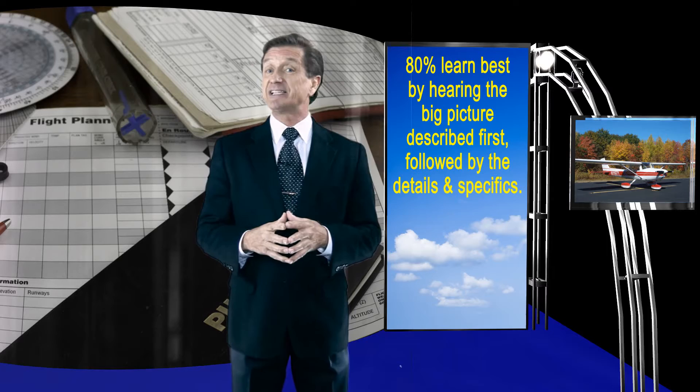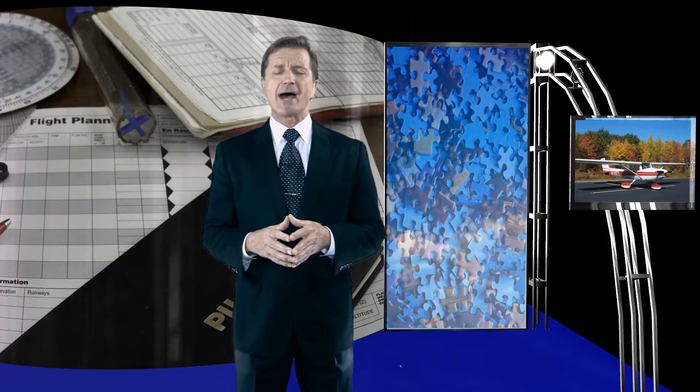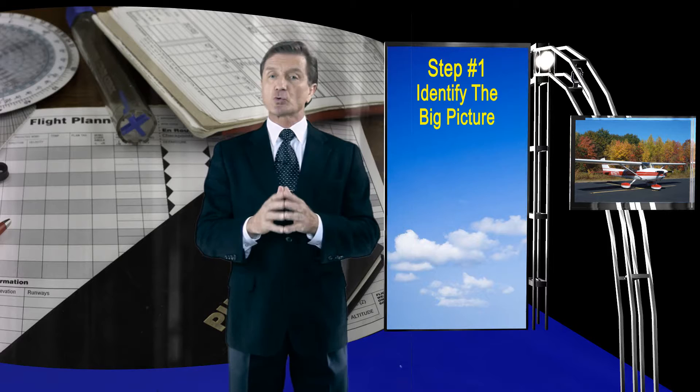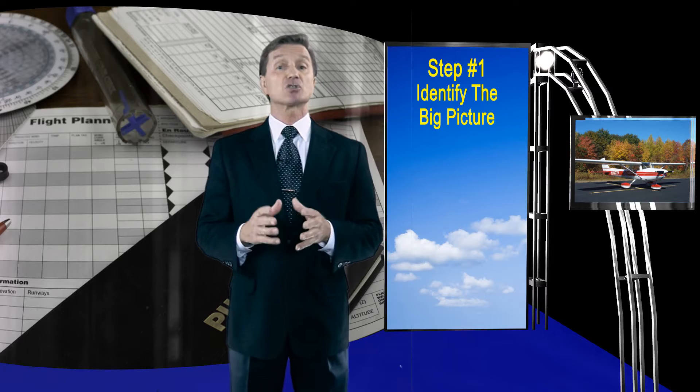Followed by all the tiny little details and specifics. Not doing so is like giving someone a thousand-piece jigsaw puzzle and insisting that they assemble the picture without telling them what the picture is. And what fun is that? Not too much fun for the person trying to assemble the picture. That's why step one of this five-step teaching process is: describe the big picture for your student.